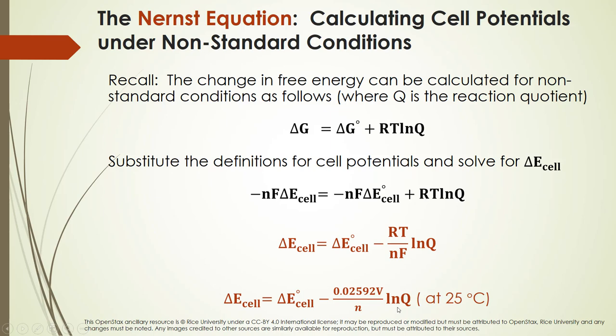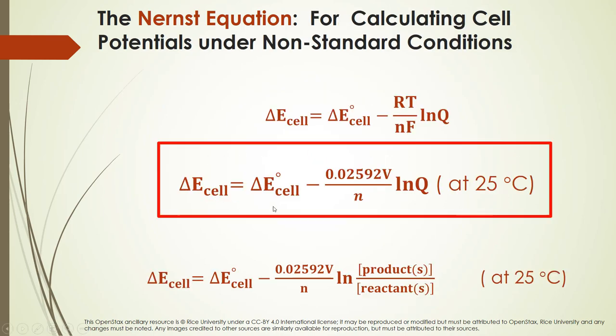Multiplied by the natural log of Q — this is the Nernst equation at 25°C. Remember that Q is the reaction quotient: we take products each raised to their coefficient power, multiply them together, and divide by reactants each raised to their coefficient power. Unlike K, Q is evaluated when we're not at equilibrium. The specific form of Q comes from the balanced reaction.